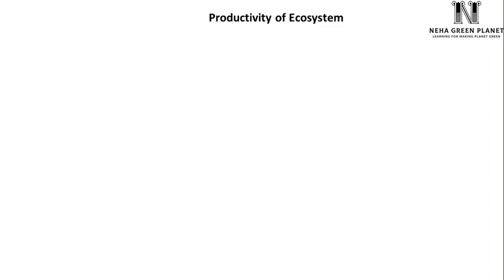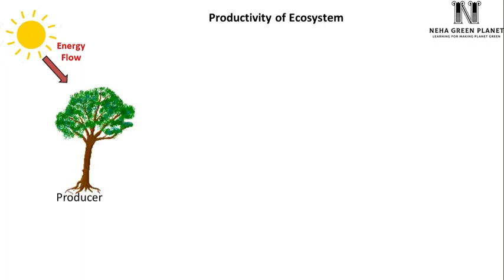In this video we are going to discuss about productivity of ecosystem. This is one of the important topics in the syllabus of UPSC exam. Sunlight is the main source of energy for all living organisms. Energy flow is one of the functional features of ecosystem by which energy is transferred into the biotic component. Sunlight is first utilized by plants or producers for photosynthesis.